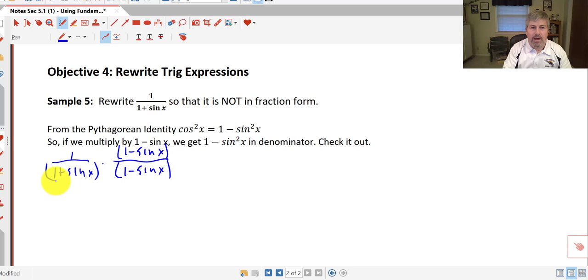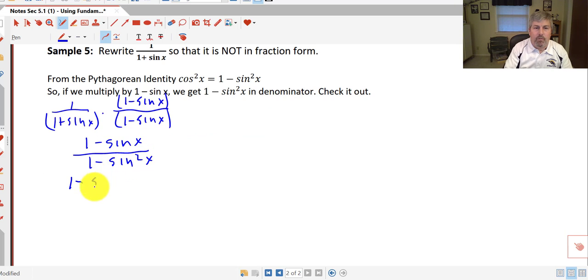So our denominator here, we have conjugates or difference of squares. Leaving me with 1 minus sine of x in the numerator, all over 1 minus sine squared x. Well, 1 minus sine squared x is cosine squared x. So I have 1 minus sine of x, all over cosine squared x. Well,